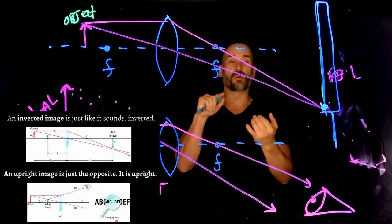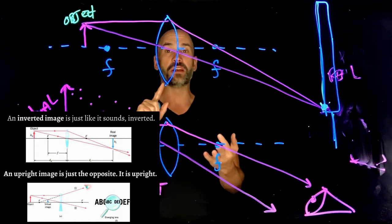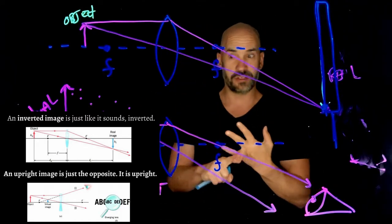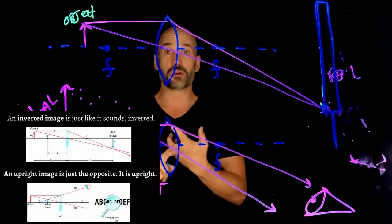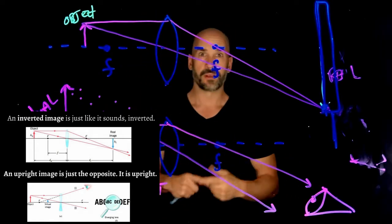So if you have a real image, you can be assured that it's going to be an inverted image. If you have a virtual image, you can be assured that it's going to be upright.